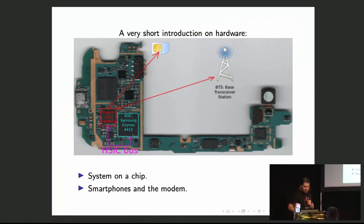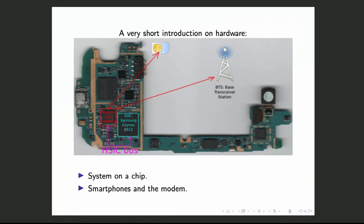This is a Galaxy S3. You have a system-on-a-chip with CPU, GPU, SD card controller and many things inside the same chip. The Wi-Fi is in a separate chip, and this is connected to the modem, which is also a separate chip. The modem has its own OS and connects to the GSM tower to make calls.